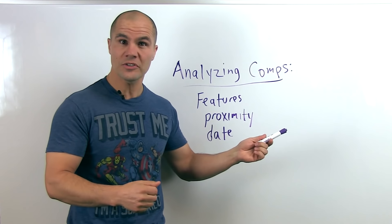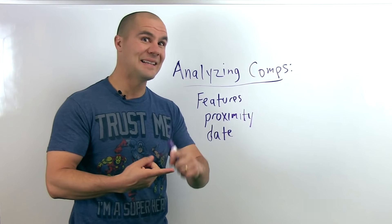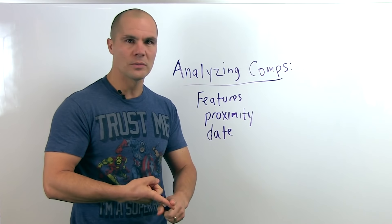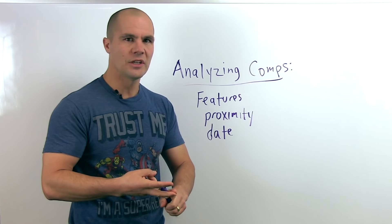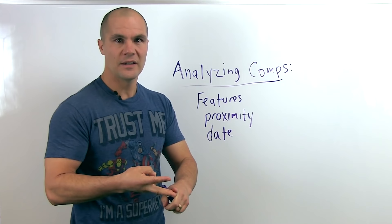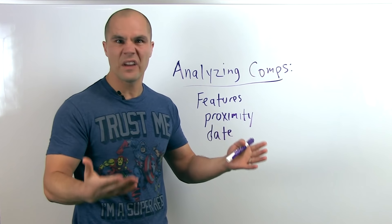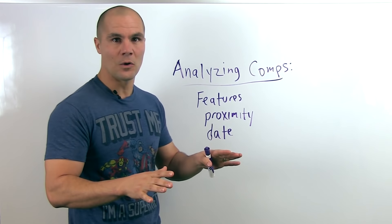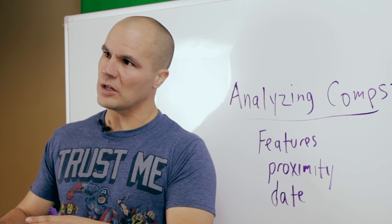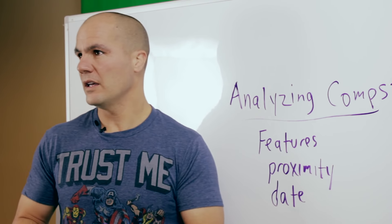The closer in features, so if you look at a comp and it's identical—same bedrooms, same square footage, it's got a basement, half acre lot—if that's identical, the closer it is to your subject property, the better it is as a comp.